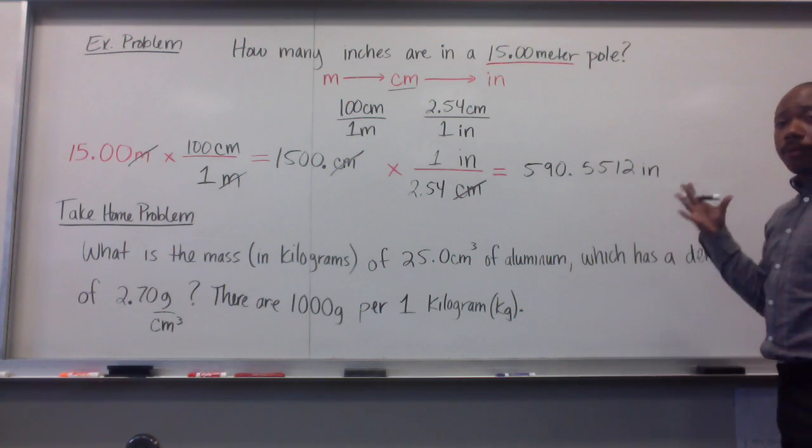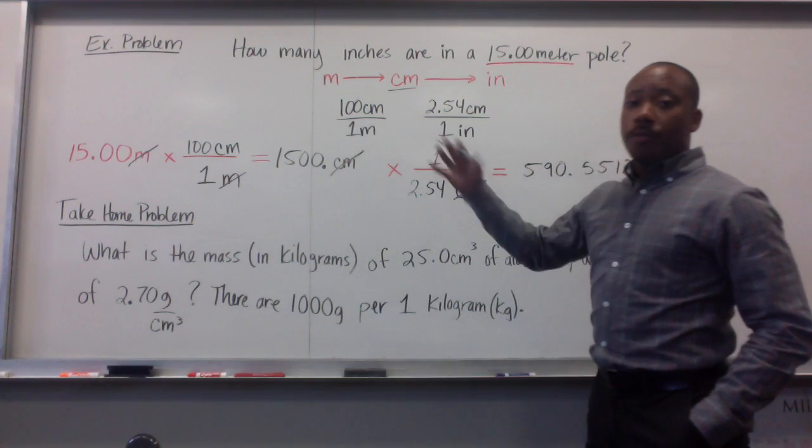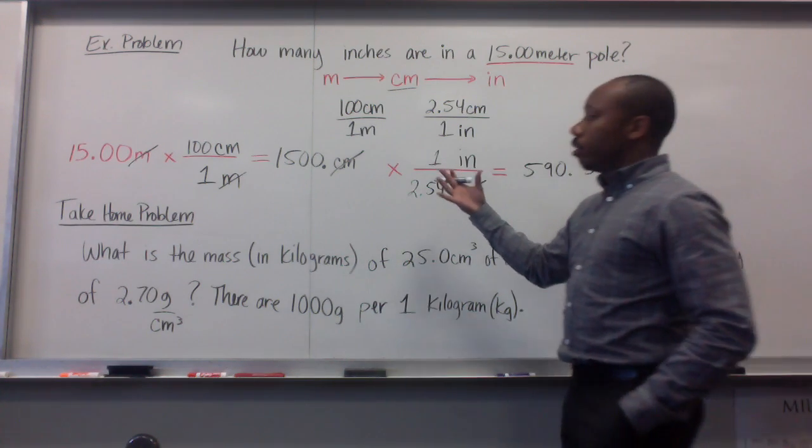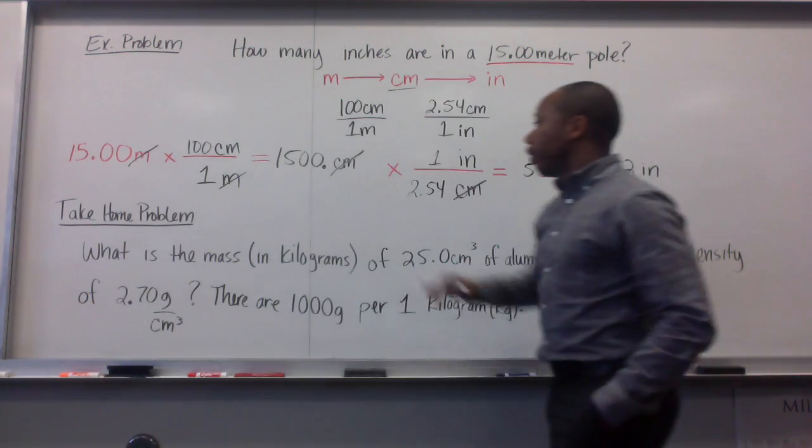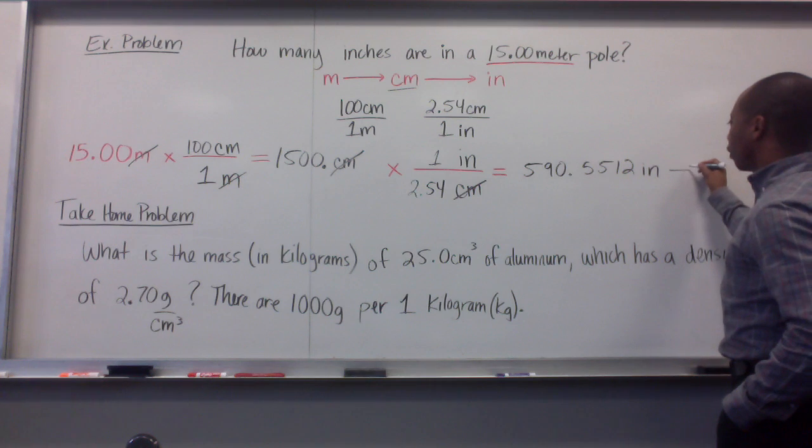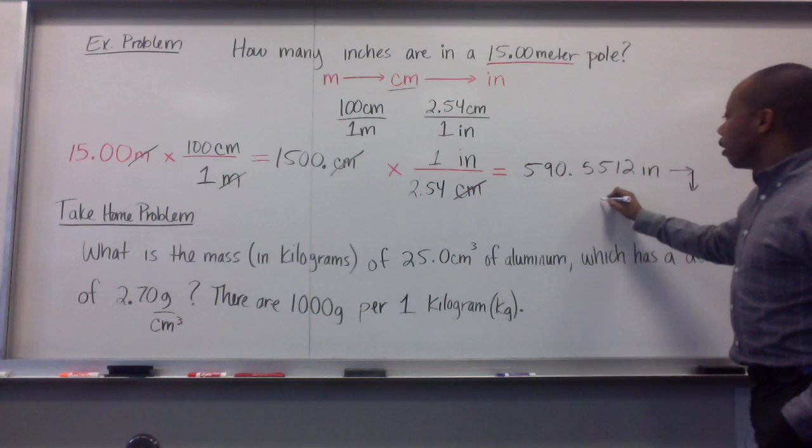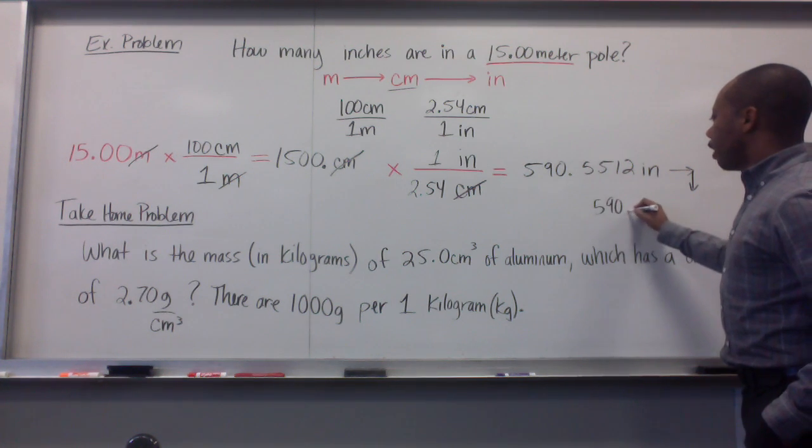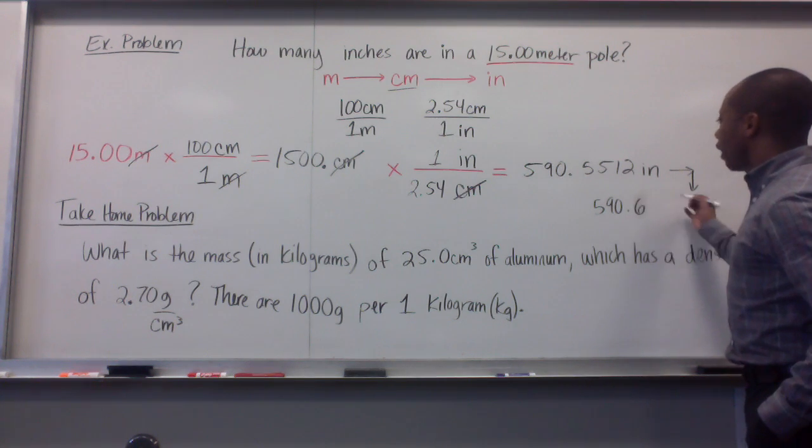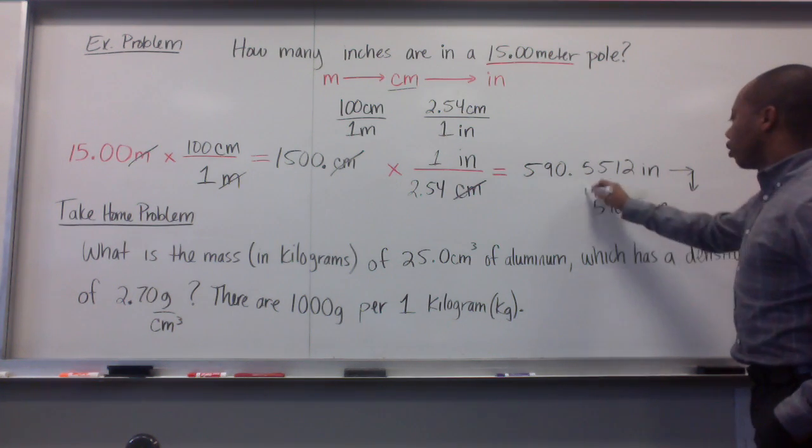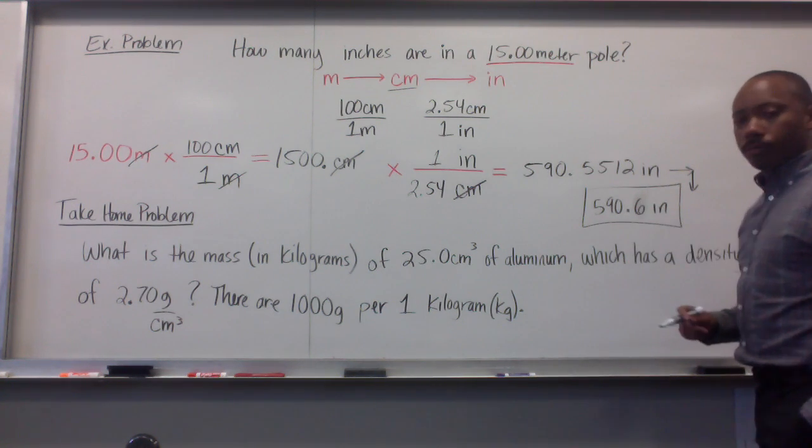That's the whole number written out. Now we have to look at our significant figures. This is an exact number, has an infinite amount of significant figures. So we have to look at this, which came from this. We have four significant figures to begin with. So we have to end with four significant figures. Thus, our final answer is 590.6 inches.